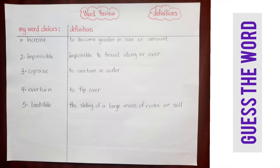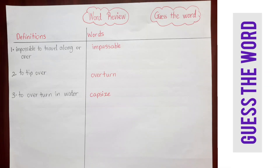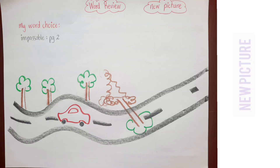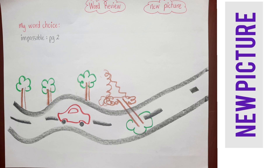Another word review activity is 'guess the word' — the students write three to five definitions and put in the missing words. Your students can also have a word challenge in which they use five words in one continuous paragraph. Finally, they can choose a word and draw a new picture that represents it.